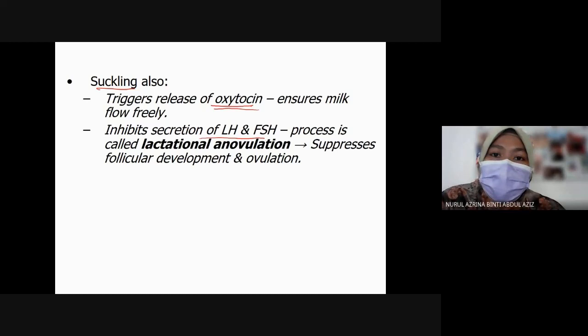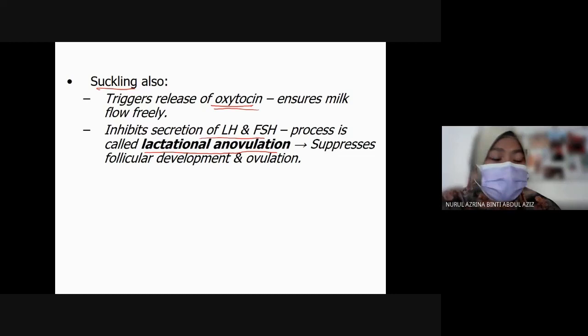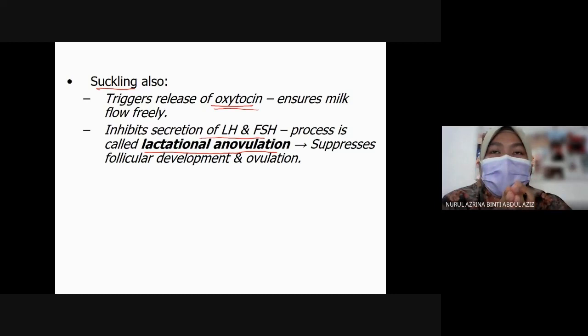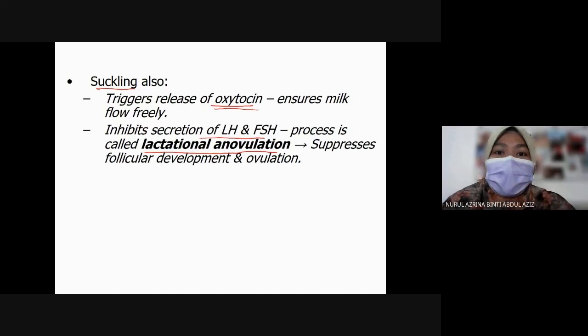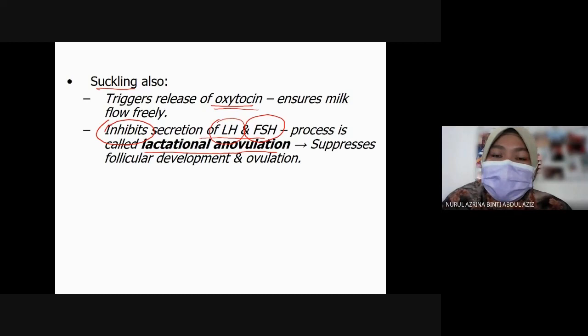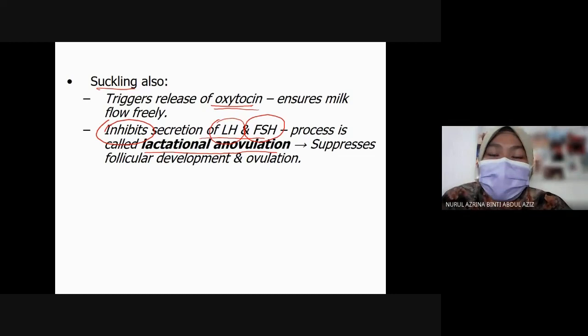Suckling also inhibits the secretion of LH and FSH — luteinizing hormone and follicle stimulating hormone. This process is called lactational anovulation, which suppresses follicular development and ovulation. That is why breastfeeding exclusively can help to space pregnancies — the Prophet also said to breastfeed for two years. When the baby suckles, it inhibits LH and FSH, so there is no follicle development and no ovulation, making the tendency to get pregnant very low.